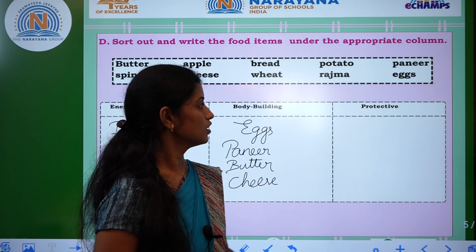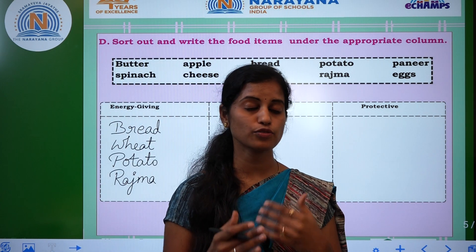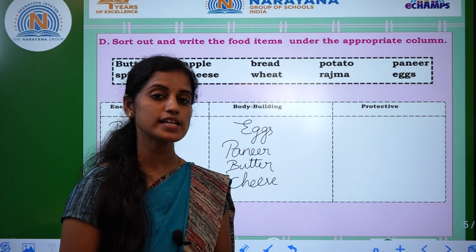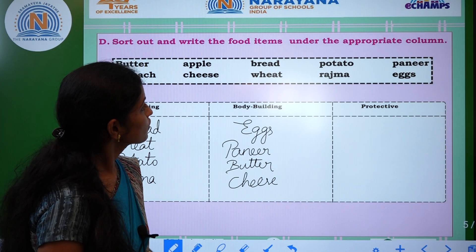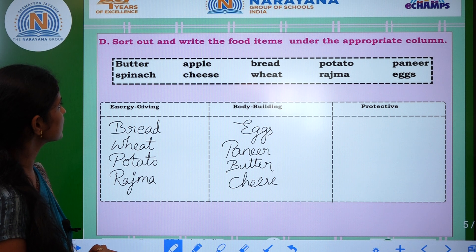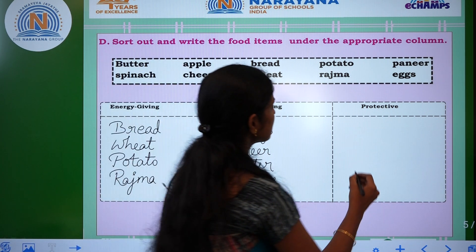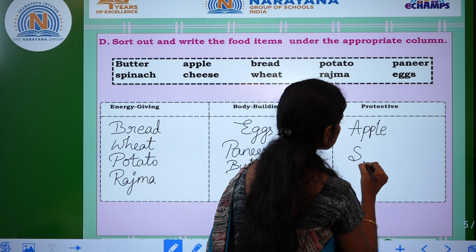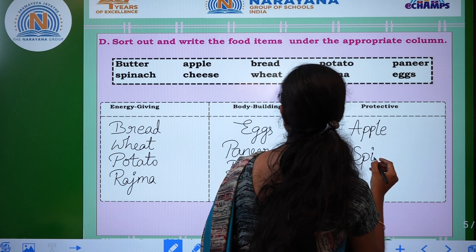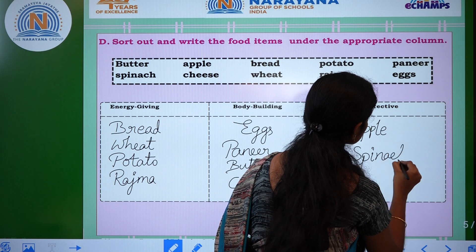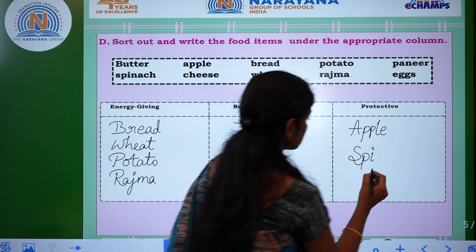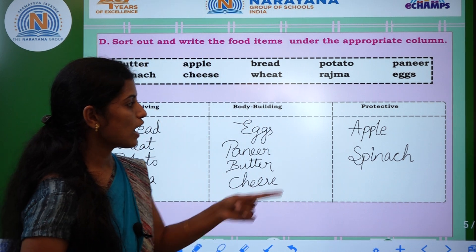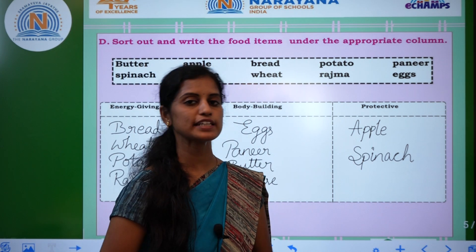Last one is protective food. Protective food means food items which contain vitamins and minerals. They are mostly present in fruits and vegetables. The fruit here is apple, and the vegetable content food is spinach. Apple and spinach — S-P-I-N-A-C-H — apple and spinach are the best examples of protective food.